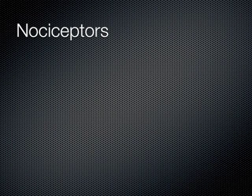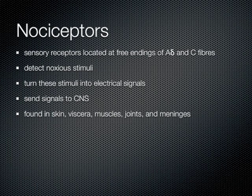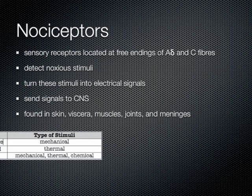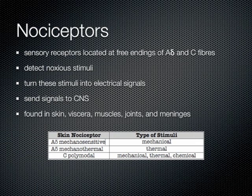Nociceptors are specialized receptors located at free endings of A-delta and C fibers. They detect noxious stimuli and turn those stimuli into electrical signals, which are then sent to the central nervous system. Nociceptors are found in the skin, viscera, muscles, joints, and meninges. Categories of skin nociceptors include A-delta mechanosensitive nociceptors, which detect mechanical stimuli like slamming your finger in a car door; A-delta mechanothermal nociceptors, which detect thermal stimuli like touching a hot pan; and C-polymodal nociceptors, which can detect mechanical, thermal, or chemical stimuli.